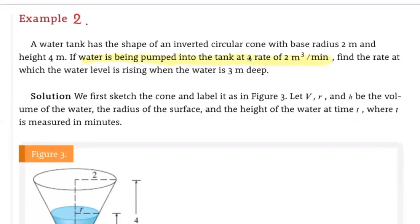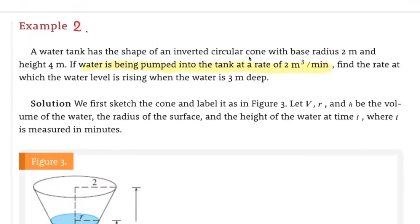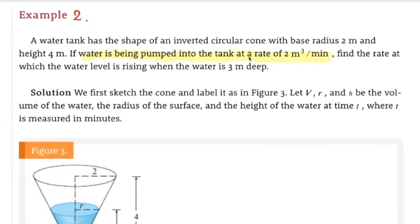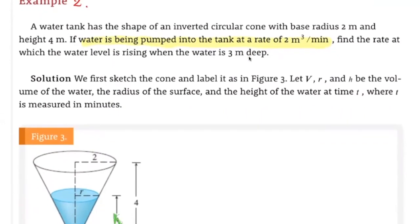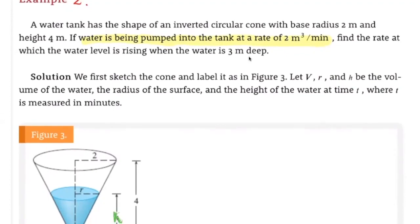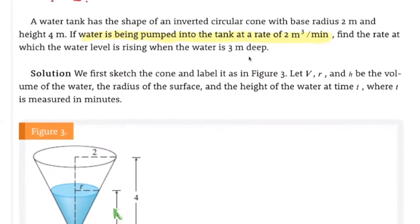Hi everyone! We're going to continue with Example 2 in Related Rates. A water tank has the shape of an inverted circular cone with base radius 2 meters and height 4 meters. If water is being pumped into the tank at a rate of 2 cubic meters per minute, find the rate at which the water level is rising when the water is 3 meters deep.